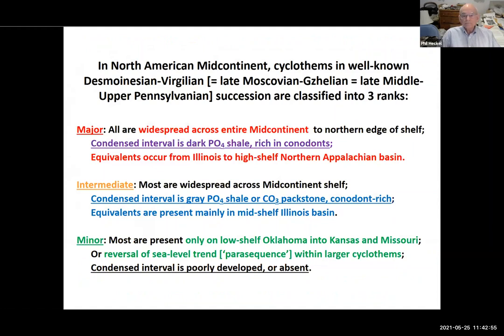To elaborate a little bit: the major cyclothems are widespread across the entire continent. To the northern edge of the shelf, the condensed interval is dark phosphatic shale rich in conodonts, and equivalents occur from Illinois to the high-shelf northern Appalachian Basin. Intermediate cyclothems are widespread across the mid-continent shelf and make it into the Illinois Basin; their condensed interval is a gray phosphatic shale or carbonate packstone, both conodont-rich. The minor cycles are mostly present only on the low shelf in Oklahoma, up into Kansas and Missouri, or they can be a reversal of sea level trend — a parasequence within the larger cyclothems.